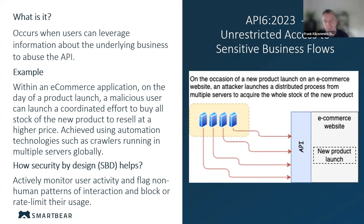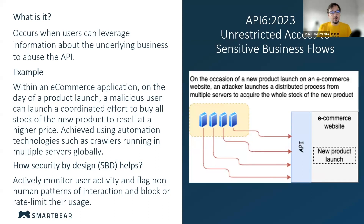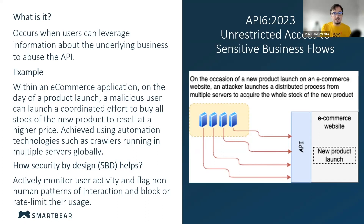Jose, how would you recommend folks mitigate this issue? It's a very interesting addition and it's really difficult to deal with. I'd recommend first having proper monitoring of user activity in place and actively monitoring and responding to it — being reactive. As soon as you can identify patterns of interaction, especially since a lot of these attacks will be automated, flag those patterns, limit those users, and maybe block them immediately.